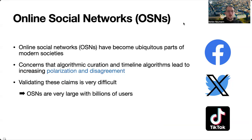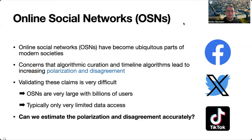The first one is that online social networks are very large with billions of users. Additionally, as researchers we cannot download the entire network because we only have very limited data access. One of the big daunting questions here is whether we can estimate the polarization and disagreement accurately even given that these networks are very large and given that we only have very limited data access.